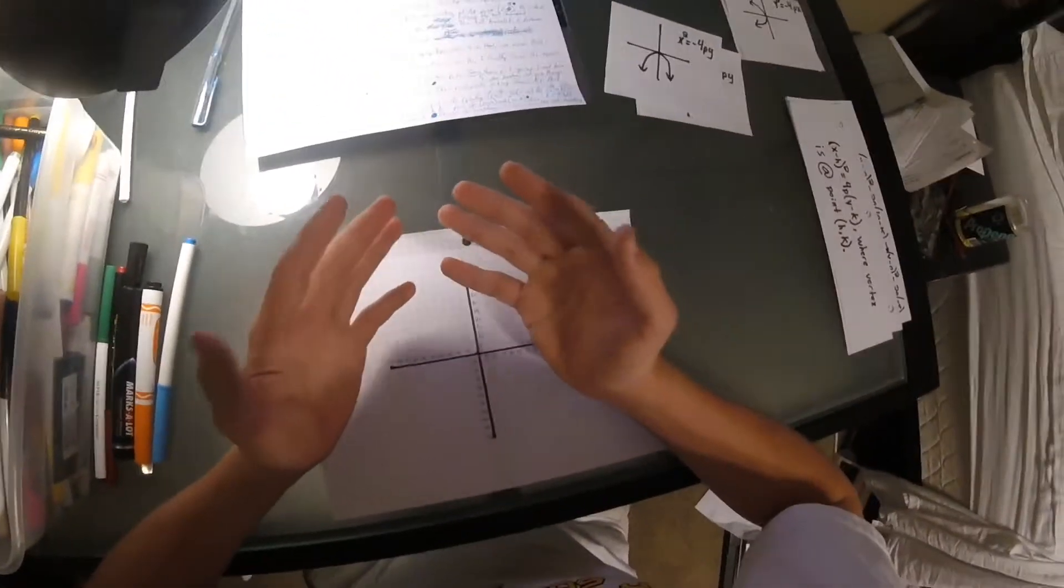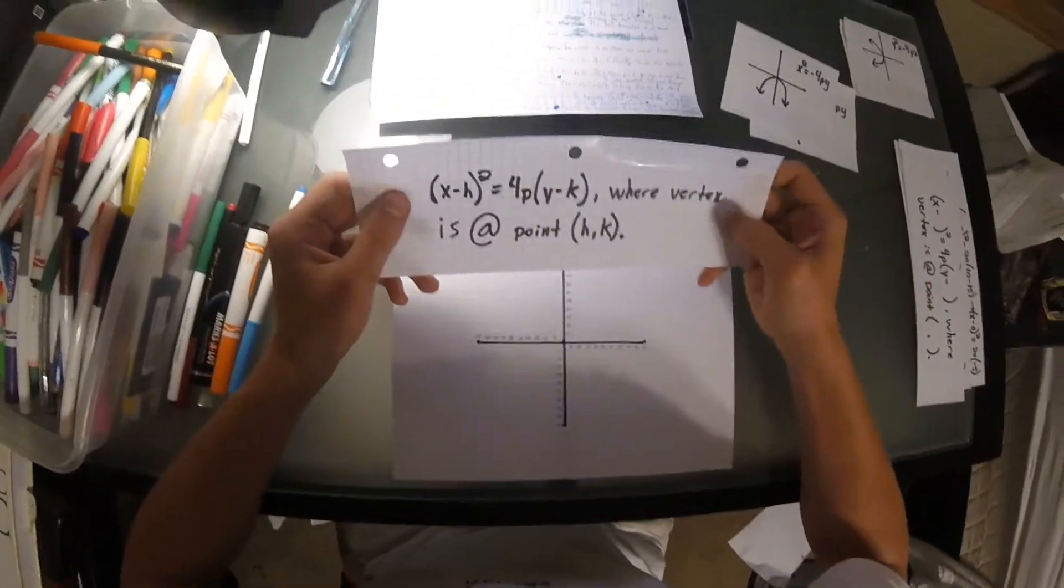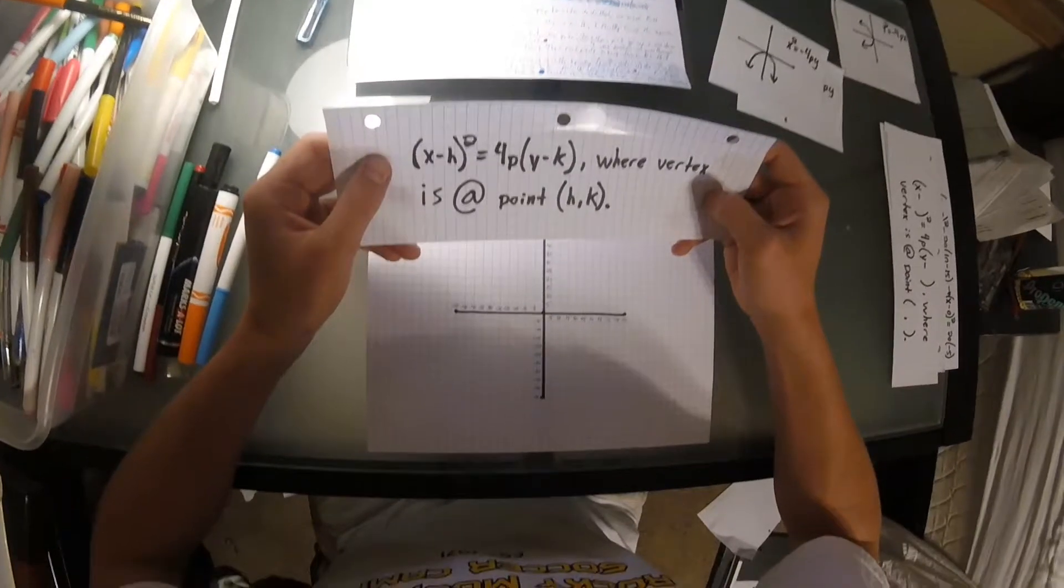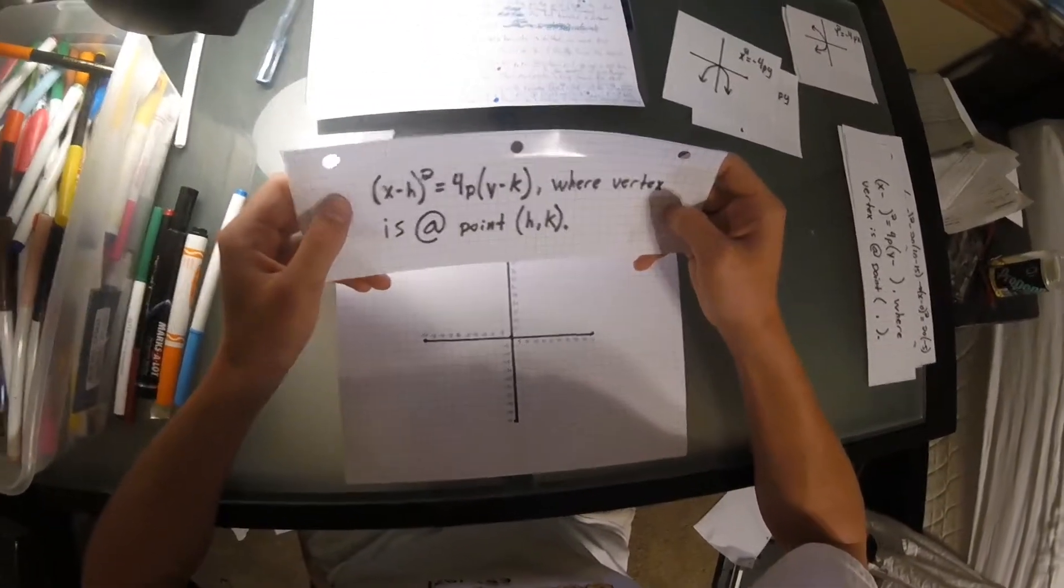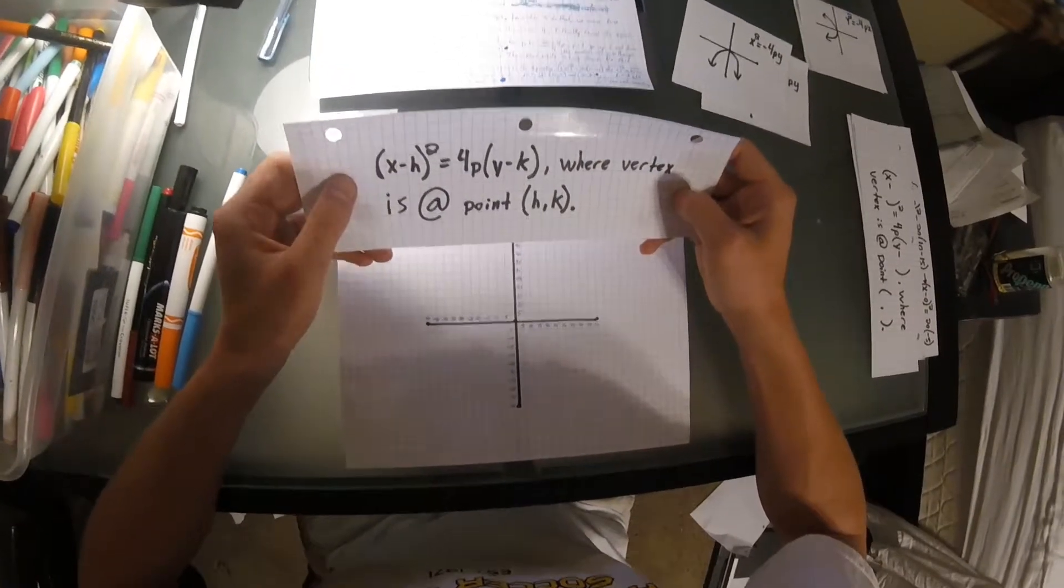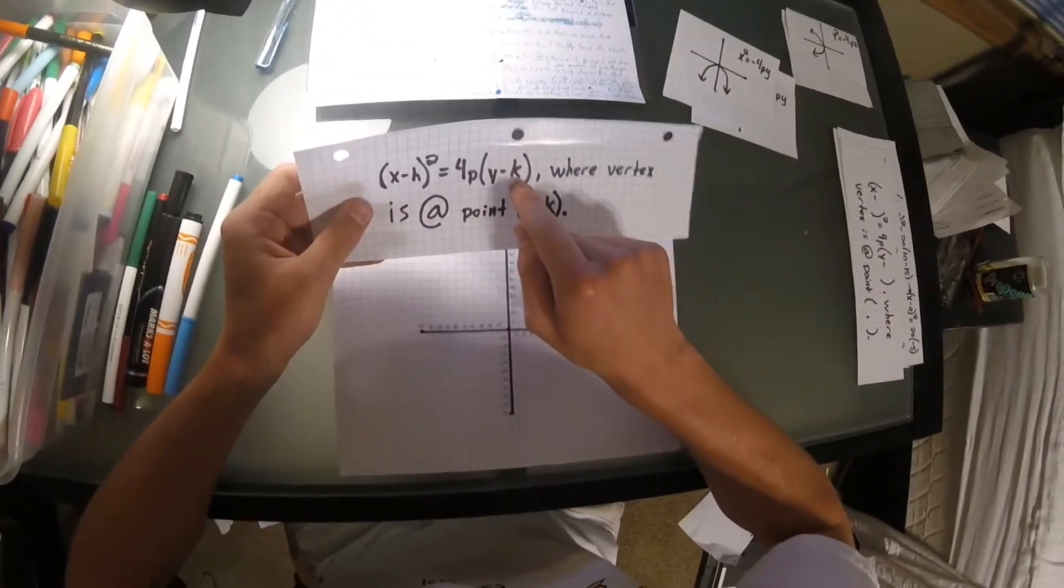So, in order to change the vertex, we have to have an entirely new formula. And that formula is x minus h quantity squared is equal to 4p times y minus k, where the vertex is at point h, k. h is your x value, and k is your y value.